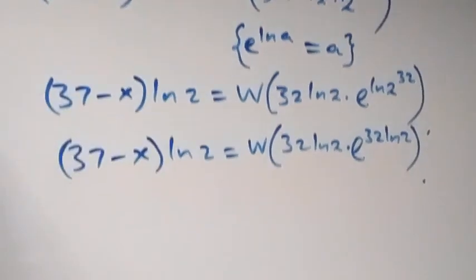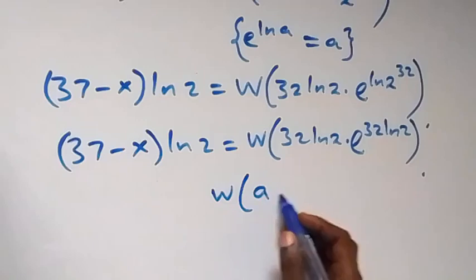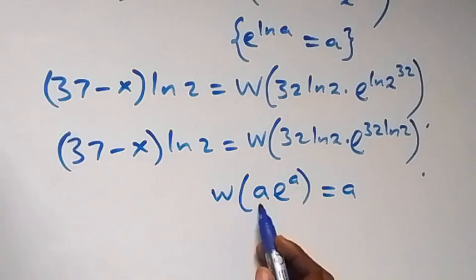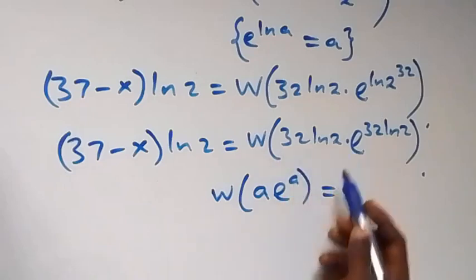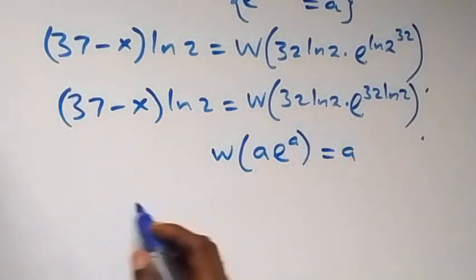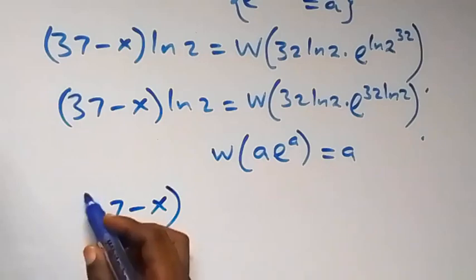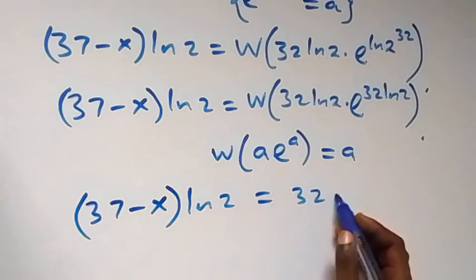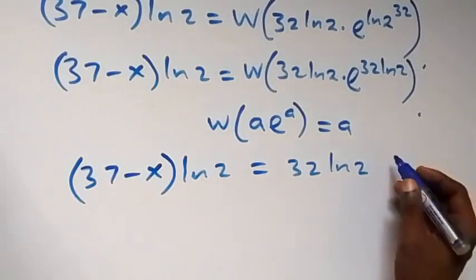Recalling the Lambert W function: W of a times e^a gives a, meaning the base and coefficient are equal. The same applies here — we have 32 ln 2 and 32 ln 2 matching, so W of 32 ln 2 times e raised to power 32 ln 2 equals 32 ln 2. Therefore 37 minus x times ln 2 equals 32 ln 2.